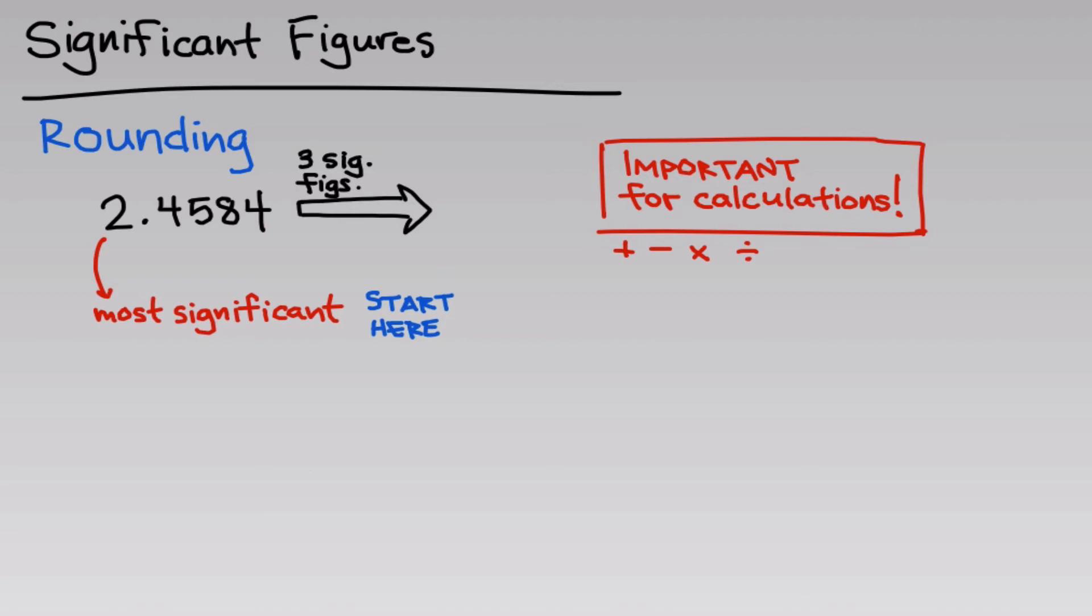From here, we simply count off the number of digits we need. So 2 is the first, 4 is the second, 5 is the third, and we've got our three digits. Then to decide what to do rounding-wise, we look at the digits that follow that last least significant digit. So here we have 84. Because that 84 is greater than 50, we round up to 2.46.